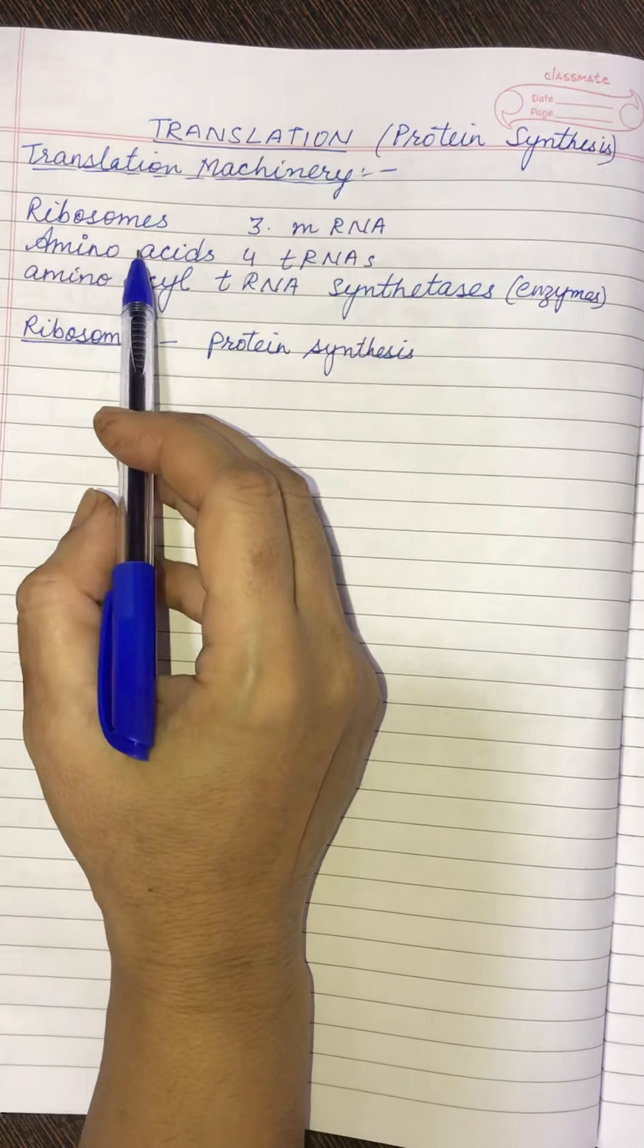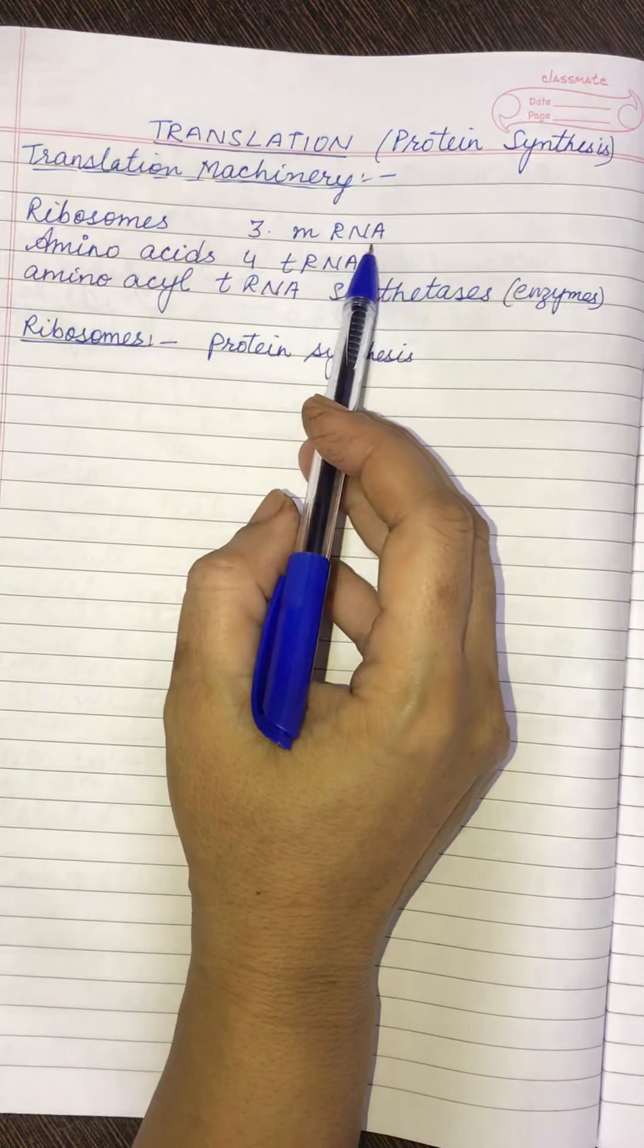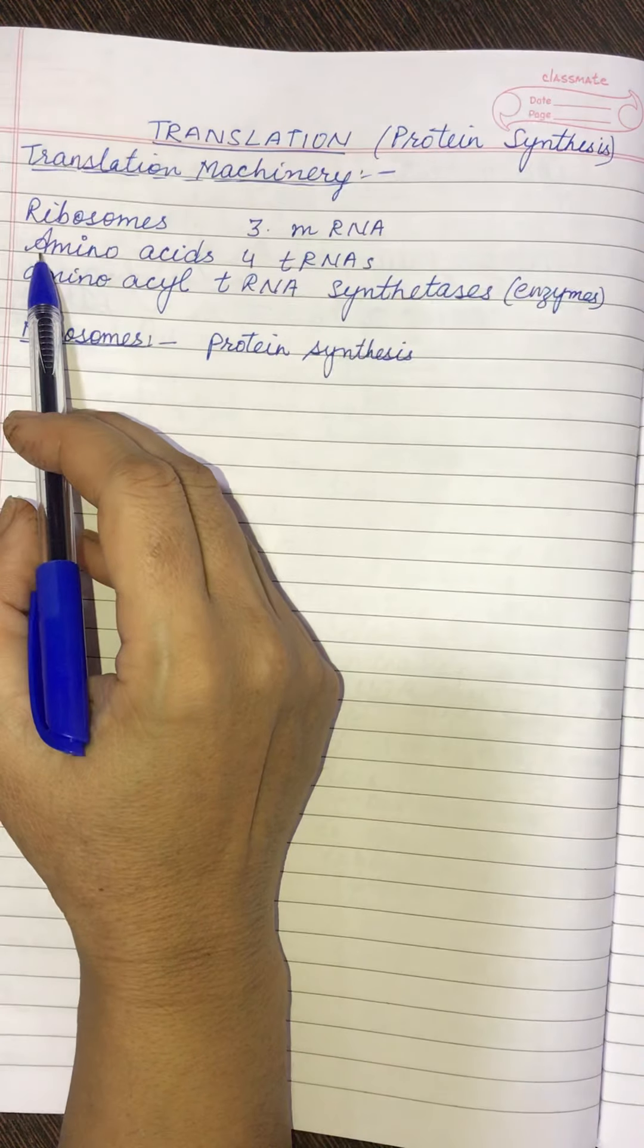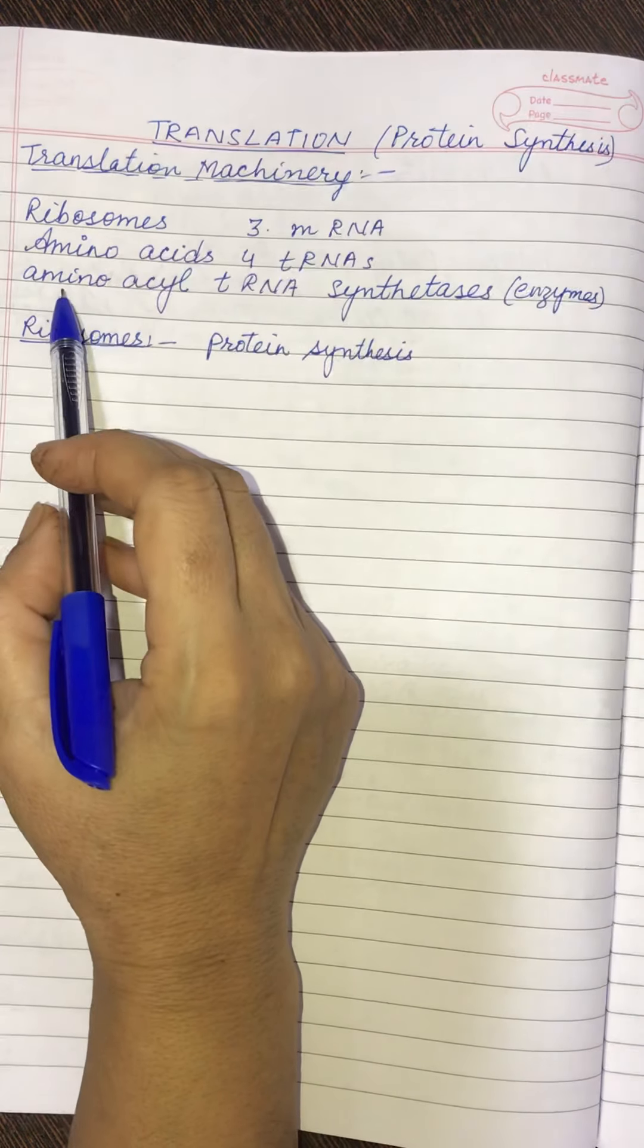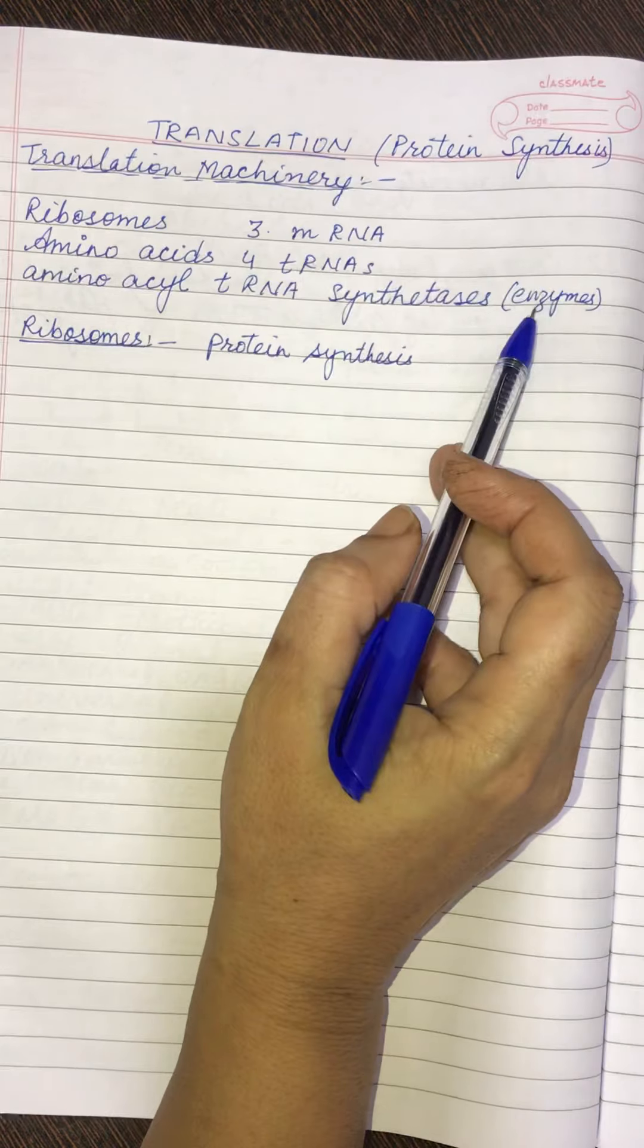So first of all, number one is the ribosomes. Then is the messenger RNA. Next, amino acids, tRNAs, aminoacyl tRNA synthetases. These are the enzymes.